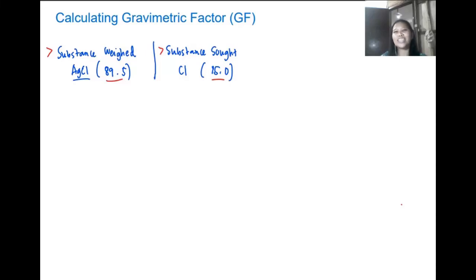Hello guys, welcome back to bcetutor.com. In today's video I'm going to teach you how you can calculate your gravimetric factor or GF. We all know that GF is a fundamental calculation involving analytical chemistry subjects. In this case we are given our substance sought and substance weight: we have AgCl and Cl together with their molecular weight.